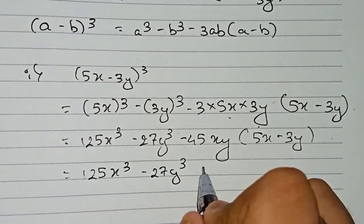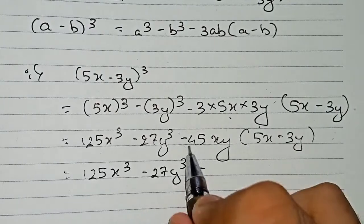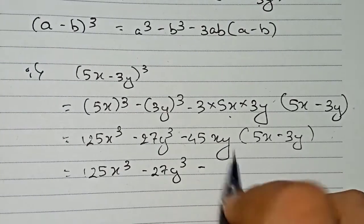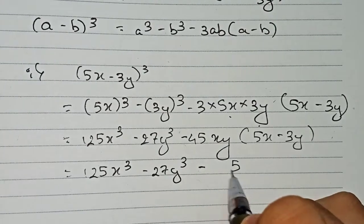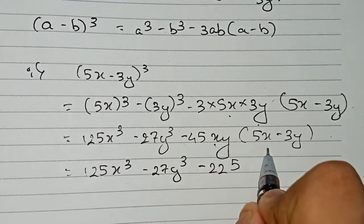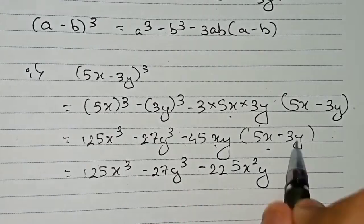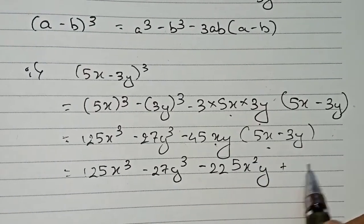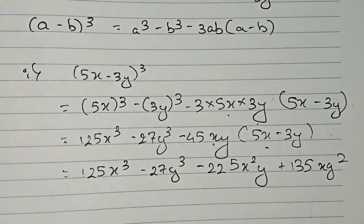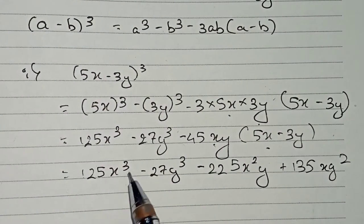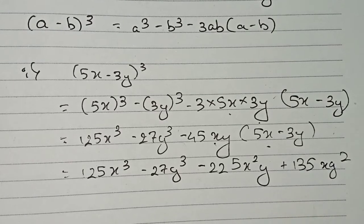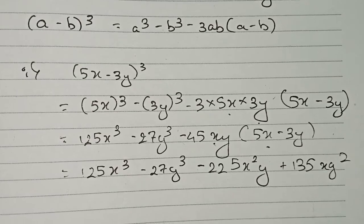Working out the signs: minus times minus gives plus. So the final expanded form is 125x cube minus 27y cube minus 225x square y plus 135xy square. This is the expanded form of 5x minus 3y whole cube.